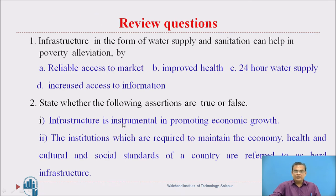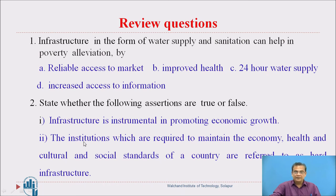Let us pause here with two review questions. Question 1 (MCQ): Infrastructure in the form of water supply and sanitation can help in poverty alleviation by — (four options given). Question 2 (True or False): First assertion: infrastructure is instrumental in promoting economic growth. Second assertion: the institutions required to maintain the economy, health, cultural and social standards of a country are referred to as hard infrastructure.